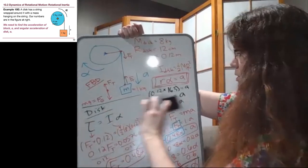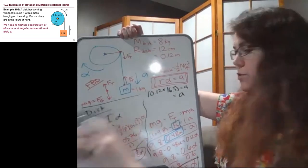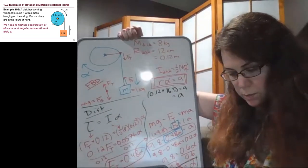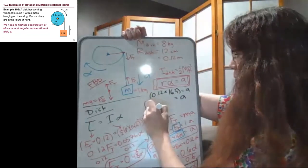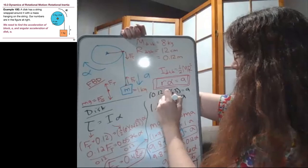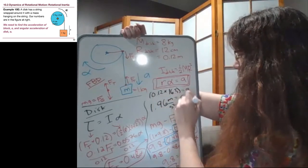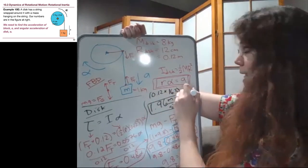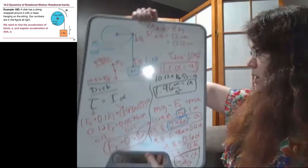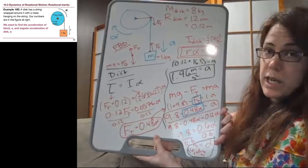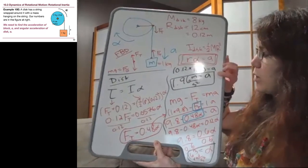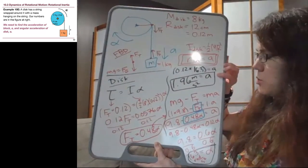And so to finish the problem, because we asked for both of those, we can multiply our result by 0.12, and we will get 1.96 meters per second squared is our acceleration A for the hanging mass. So our two numbers here are the 16.3 radians per second squared and the 1.96 meters per second squared.